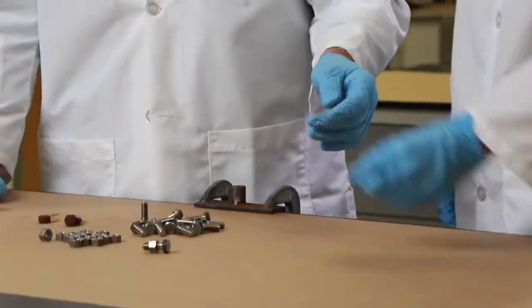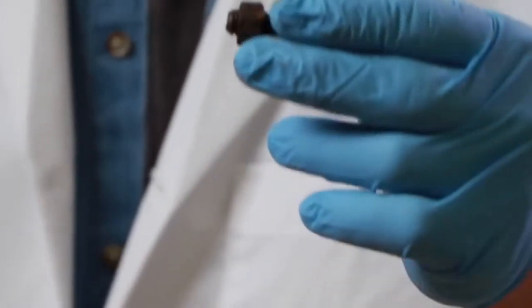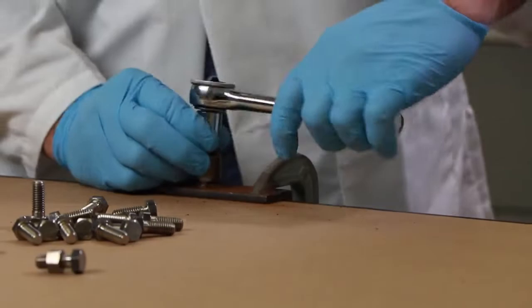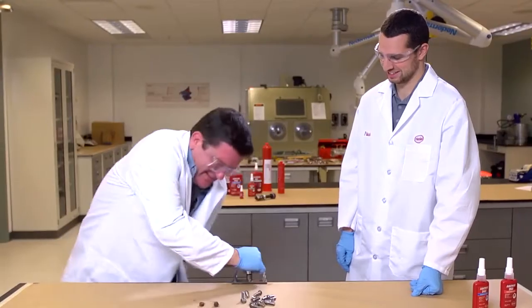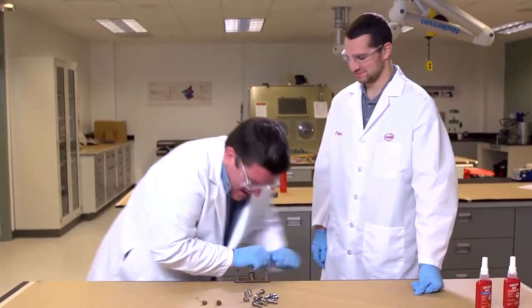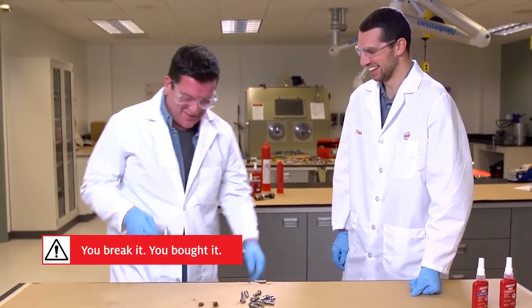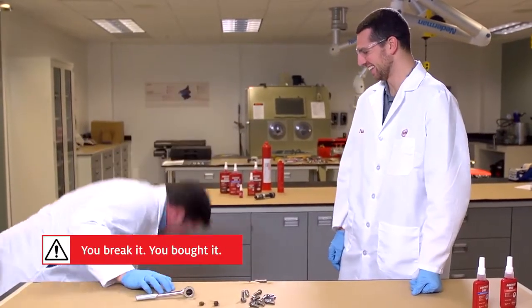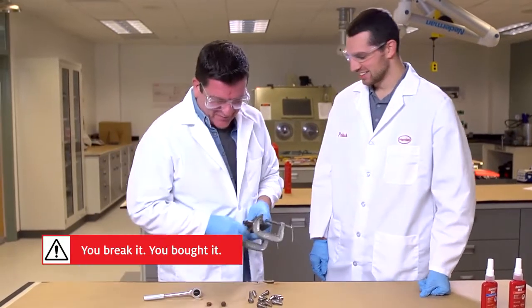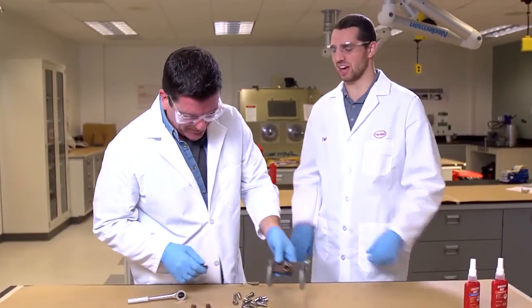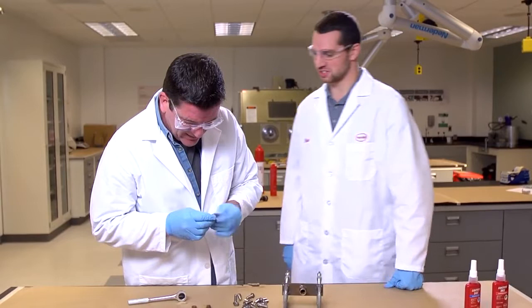You got another one there? What's this one here? Yeah. This has no threadlocker. Wow. Look at that. I think I broke it. Wow. What a difference that is. That is amazing. Absolutely amazing. Yeah. So that corrosion really got in there and rusted those bolts together. Wow. That's awesome.